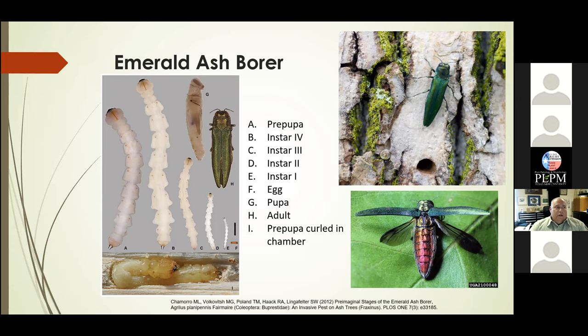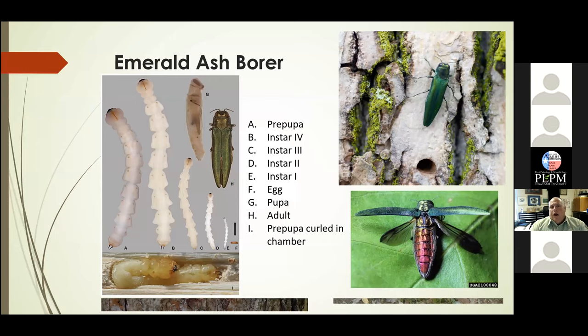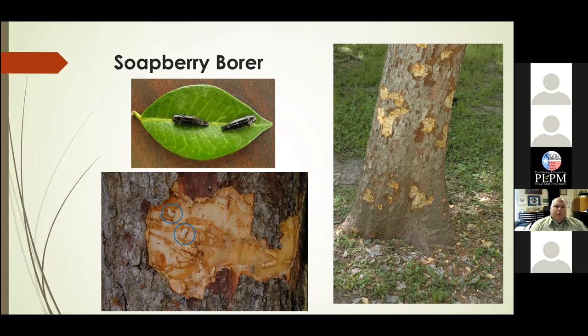We can talk about emerald ash borer all day long — there are a lot of developments. We're starting our trapping program again, putting about 550 traps statewide looking for this insect. Currently we have it in six counties. One other Agrilis species we worry about is the soapberry borer, an invasive from Mexico. Its larvae also have that bell-shaped abdominal segments characteristic of Agrilis. They're very different from our native Agrilis in that they're black with four white spots on their wing covers — fairly easy to identify in a soapberry tree.